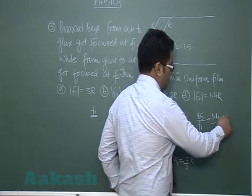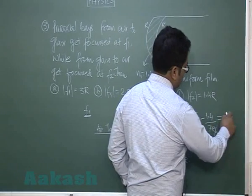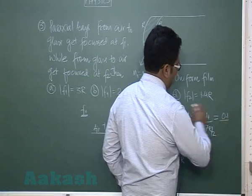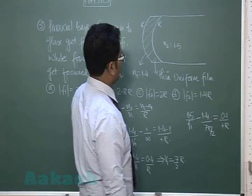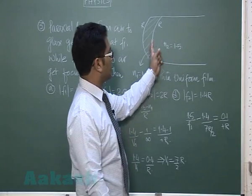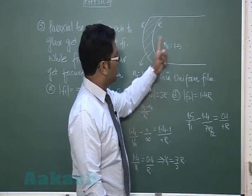n2 minus n1 is equal to n2 minus n1, so that will be 0.1, and the radius would again be plus r because the rays traveling in this direction according to the sign convention from pole to the center.